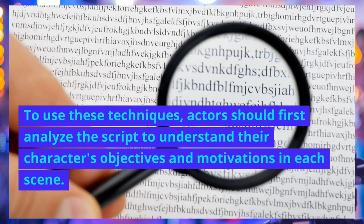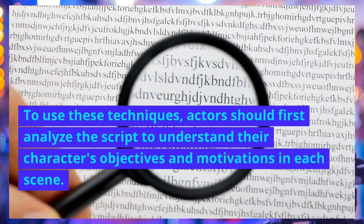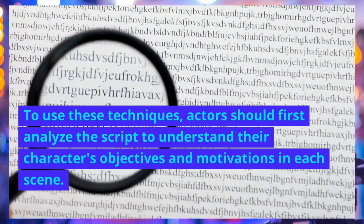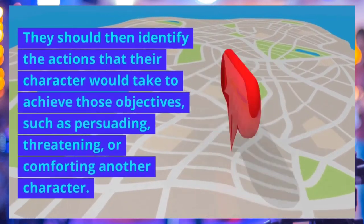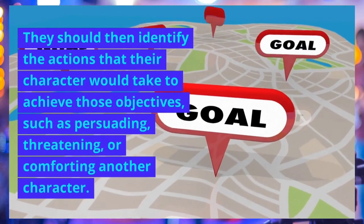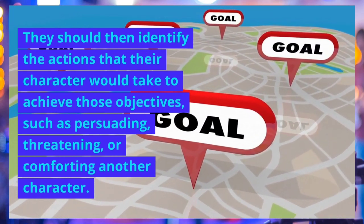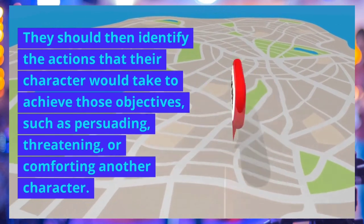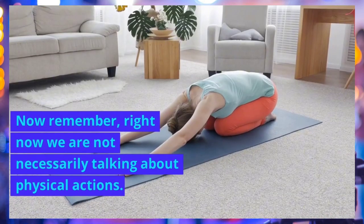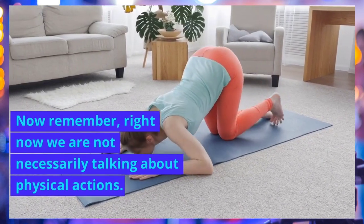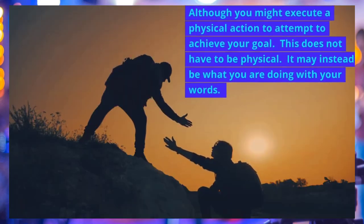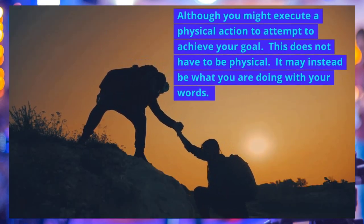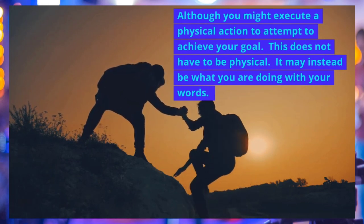In acting, actions and objectives are techniques used by actors to create believable characters and performances. By using these techniques, actors can create fully realized characters that engage the audience and tell a compelling story. Actors should first analyze the script to understand their characters' objectives and motivations in each scene, then identify the actions their character would take to achieve those objectives — such as persuading, threatening, or comforting another character. Remember, we're not necessarily talking about physical actions; it may instead be what you're doing with your words.